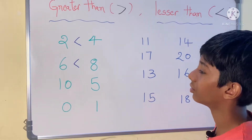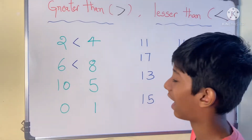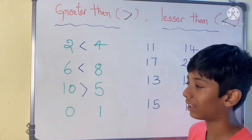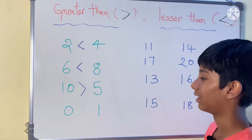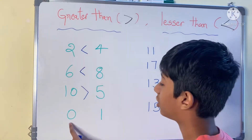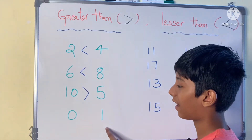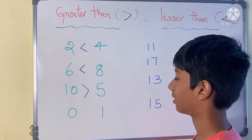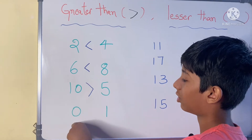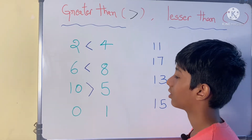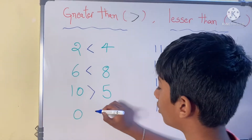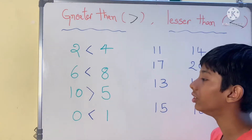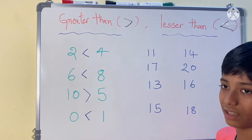So we use greater than — ten is greater than five. Now zero and one: which is bigger, which is small? One is big, zero is small. So we use lesser than — zero is lesser than one.